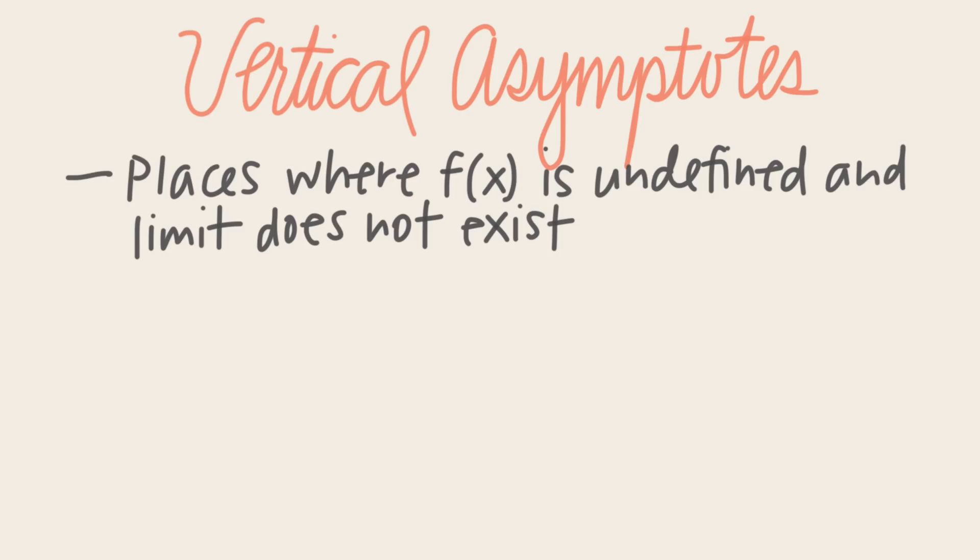So if a vertical asymptote is an invisible electric fence, we now know how to discover that fence, and understand why it exists.